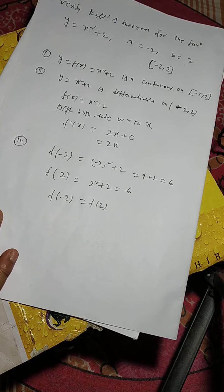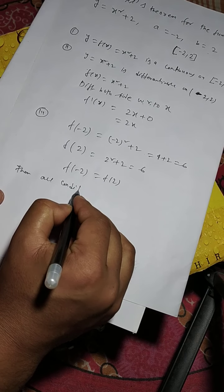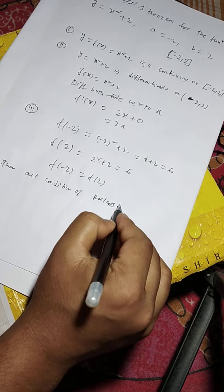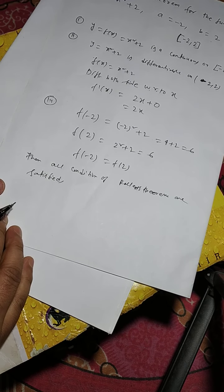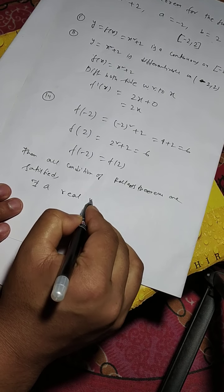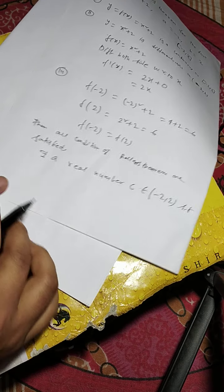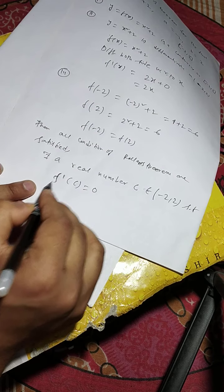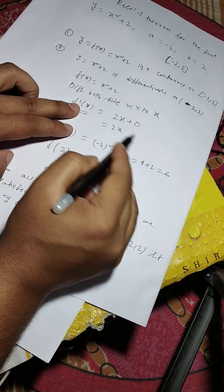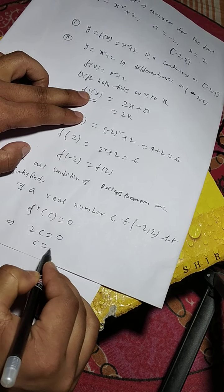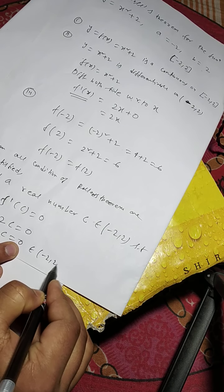All conditions of Rolle's theorem are satisfied. Then there exists a real number c belonging to the open interval (−2, 2) such that f'(c) equals 0. Since f'(x) equals 2x, replacing x by c gives 2c equals 0, so c equals 0. Since 0 belongs to the open interval (−2, 2), Rolle's theorem is verified.